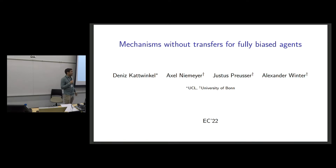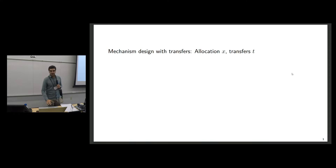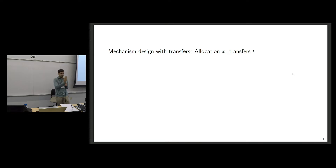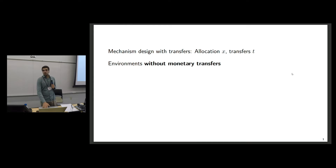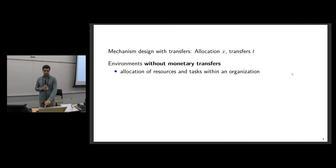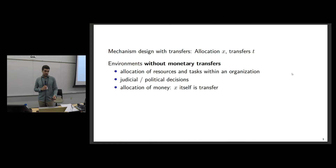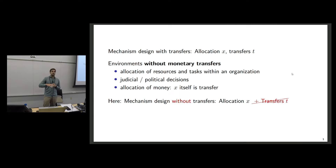The title is "Mechanisms Without Transfers for Fully Biased Agents." In many classical settings of mechanism design, the designer has two tools at his disposal: an allocation rule and a transfer rule. Having transfers gives the designer great flexibility in incentivizing agents to report their private information truthfully. But there are many environments where monetary transfers are not feasible — for example, allocation of resources within an organization, or judicial and political decisions.